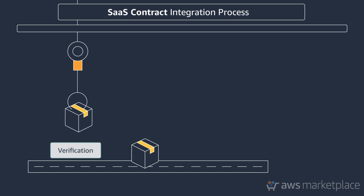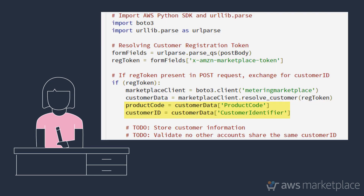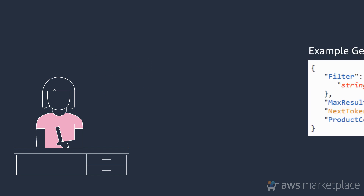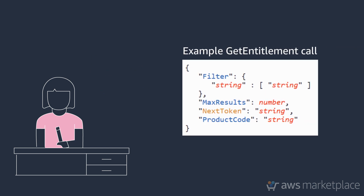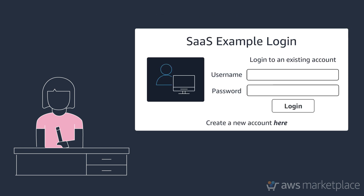Now, let's move into the SaaS contract pricing model. Verifying customers for this product offering is similar to SaaS subscription, but with one extra step. You will still obtain a token as a parameter in a POST request and need to exchange it for the customer identifier and product code. Additionally, you will need to verify which dimension a customer is subscribed to and the quantity requested, if applicable. To do this, call GET Entitlement with the customer identifier in the filter object and product code. The response returns the dimension a customer is subscribed to, the quantity, and expiration date. Onboard the customer or let them sign into an existing account so they can begin using the application.